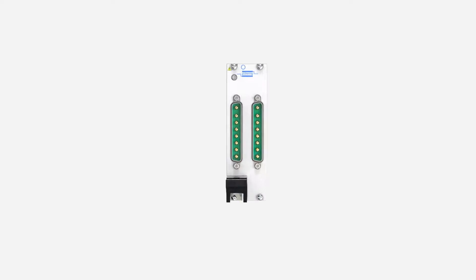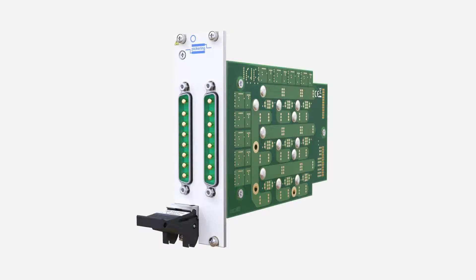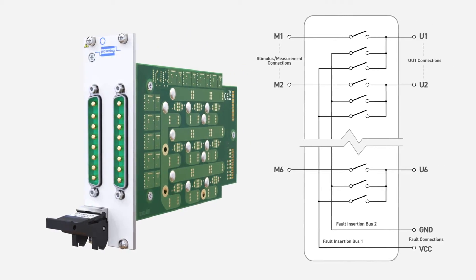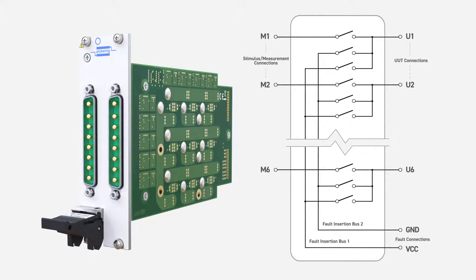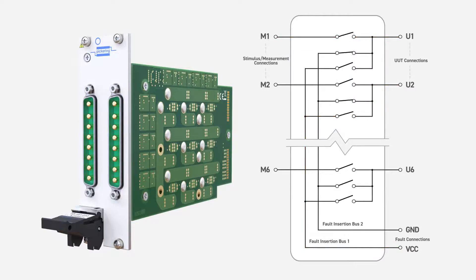The principle of fault insertion is simple. The switch modules intercept wires between the test system and the ECU and either pass the signals through unchanged or add a range of fault conditions. As an example, here is a simple fault insertion switch with six IO channels. Under normal conditions, the through switches between the test system and the ECU under test are all closed. Faults can then be injected as follows: IO connection disconnected; IO connected to one of two fault signals, usually ground and VCC; IO connections shorted together via the fault bus.